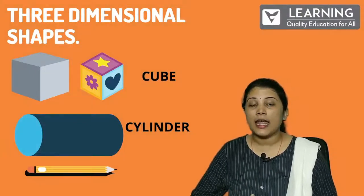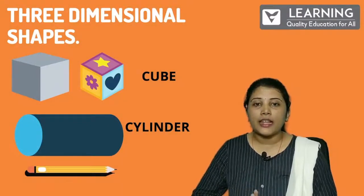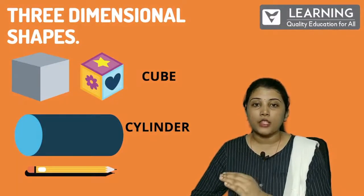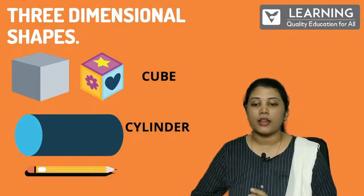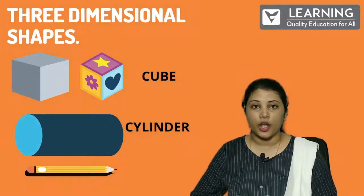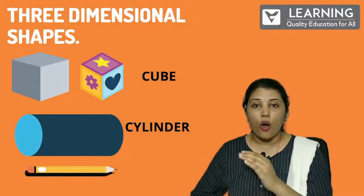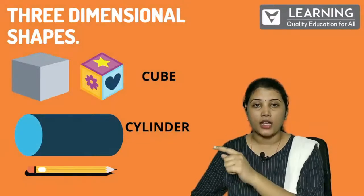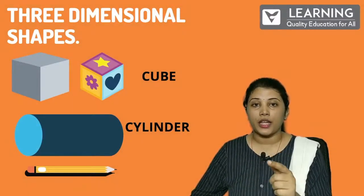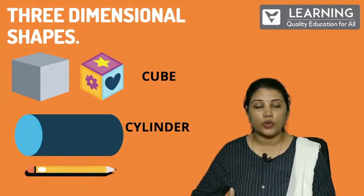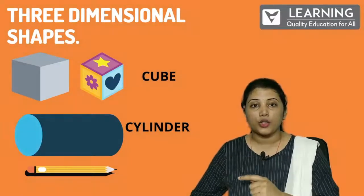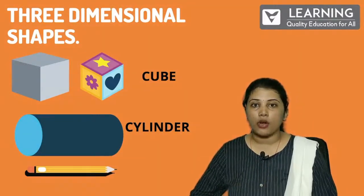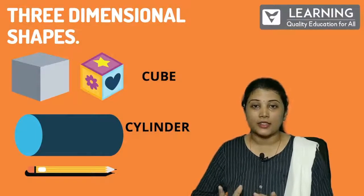Three-dimensional shapes. You will get these in your book. First one is cube. Do you see? All the sides are showing up. How many corners are there? 1, 2, 3, 4 at the top, and then down also we have 1, 2, 3, 4. Total — 8 corners. Yes, students, cubes are having 8 corners.